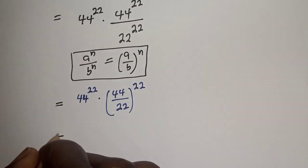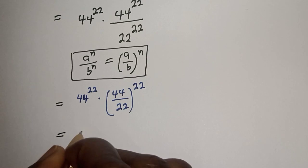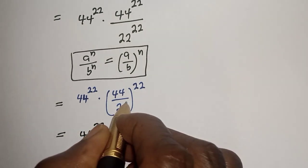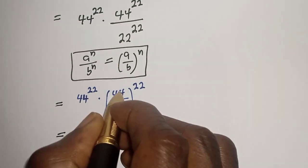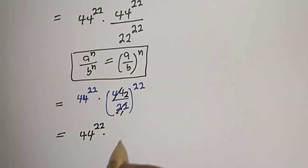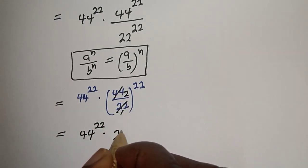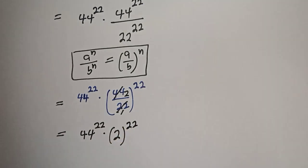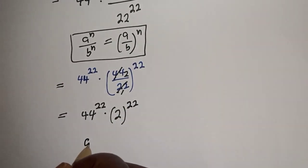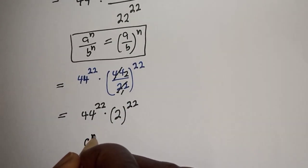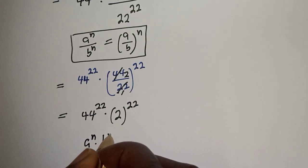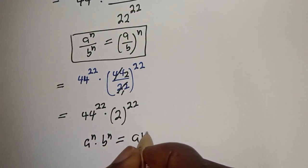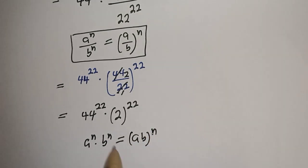This equals 44 raised to power 22 multiplied by 2 raised to power 22, since 44 over 22 equals 2. If you have a raised to power n multiplied by b raised to power n, this is equal to a times b raised to power n.